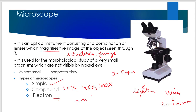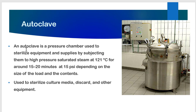The electron microscope consists of electrons instead of light, so it magnifies things to the nano range. It includes the scanning electron microscope. Moving ahead to the next equipment, we have the autoclave. The autoclave is a pressure chamber used to sterilize equipment and supplies by subjecting them to high-pressure saturated steam at 120 degrees Celsius for around 15 to 20 minutes at 15 psi — pounds per square inch — depending on the size and load of the contents.